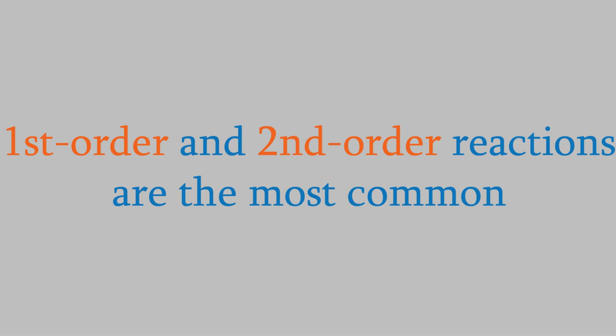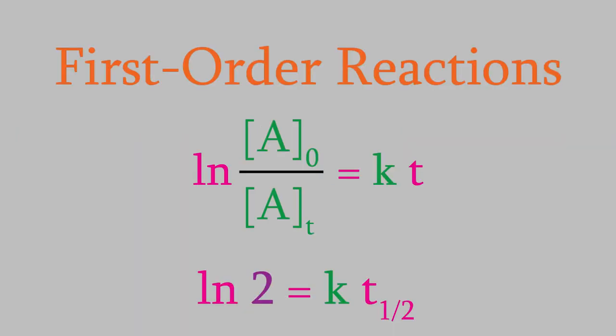But before we get into that, I first want to tell you about a useful and practical tip that researchers use when they study brand new first-order reactions. As we discussed last time, you can learn a lot about the rate of a first-order reaction using these two equations, but sometimes we don't have all the data we need to use them. For example, what if we don't know k, the rate constant? I want to tell you about another way that we can get information about first-order reactions — one of the most common ways real researchers use to find the rate constant when studying a brand new reaction.